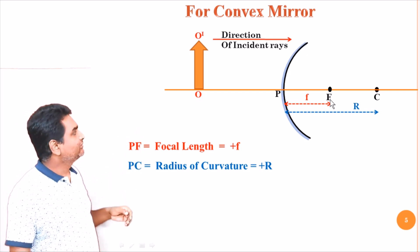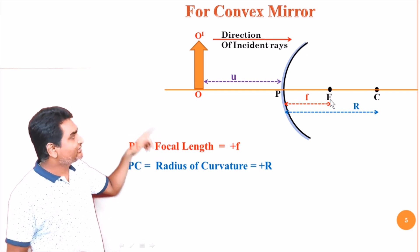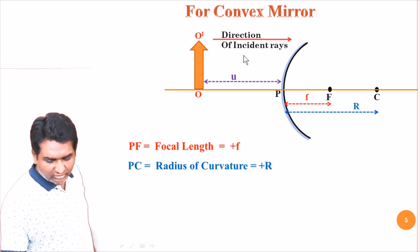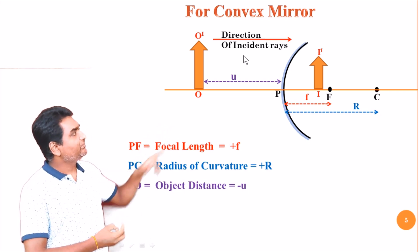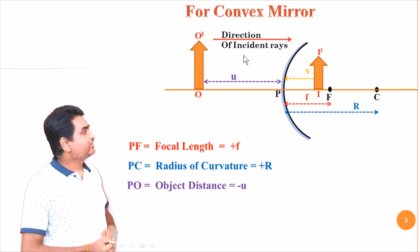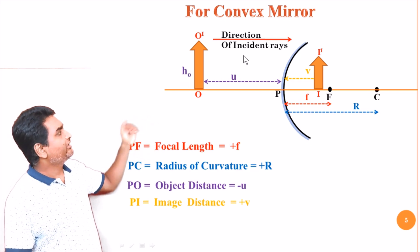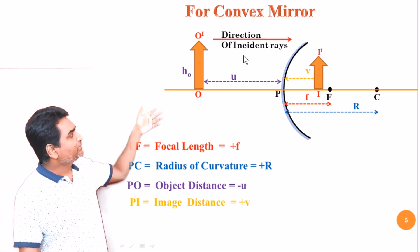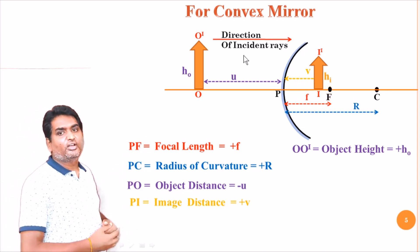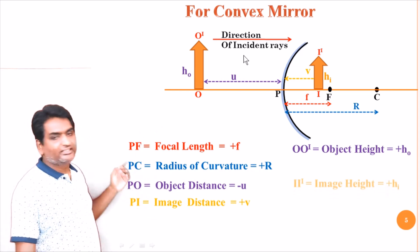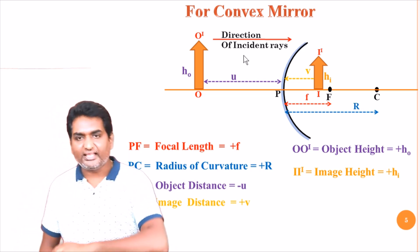Consider an object O-dash and let U be the object distance. The distance measured from the pole to object is measured against the direction of the incident ray, so object distance is negative. For convex mirrors, the image is formed inside the mirror, so the distance from the pole to image is measured along the direction of the incident ray — so this distance is positive. The object height H-naught is above the principal axis, so it is positive. The image is also formed above the principal axis, so the image height H-i is also positive. These are the sign conventions to be remembered for concave and convex mirrors.